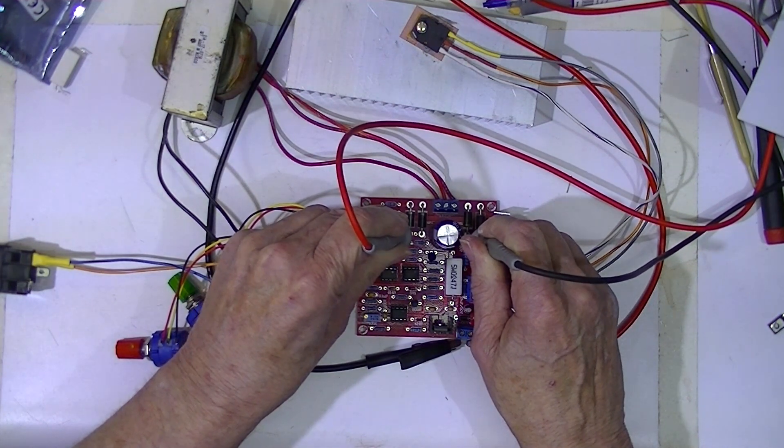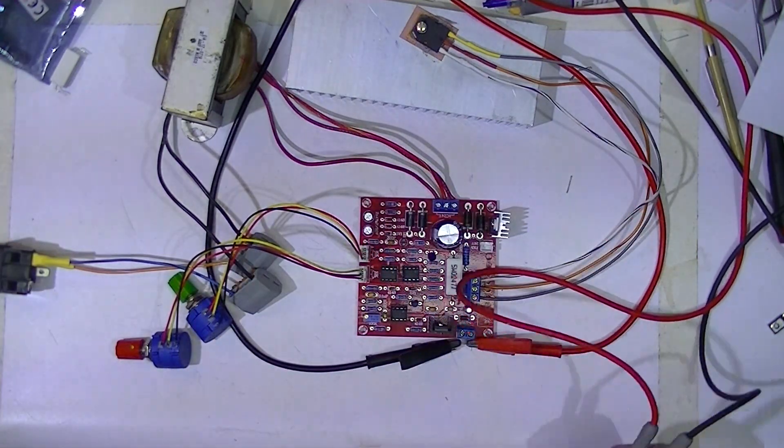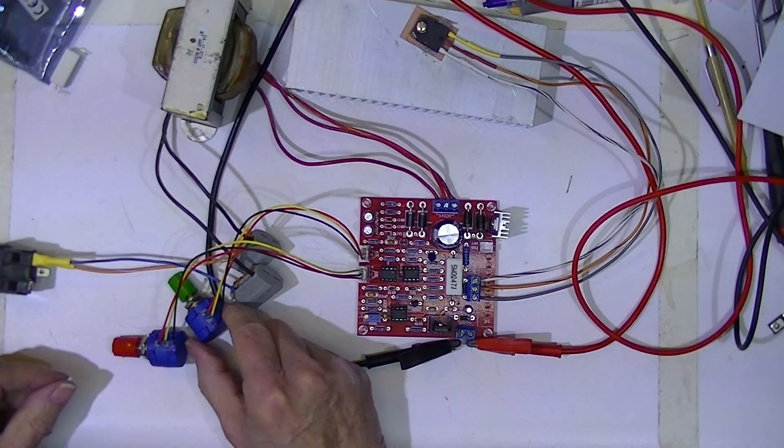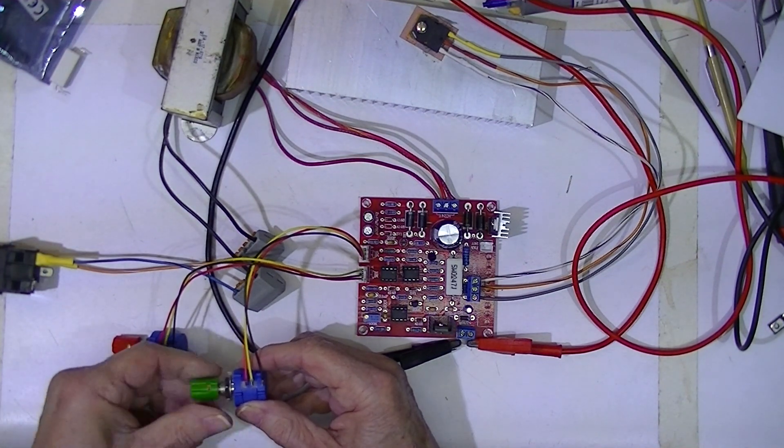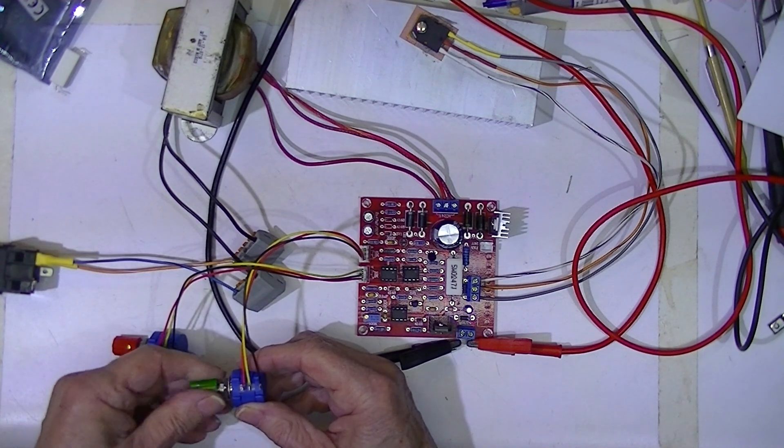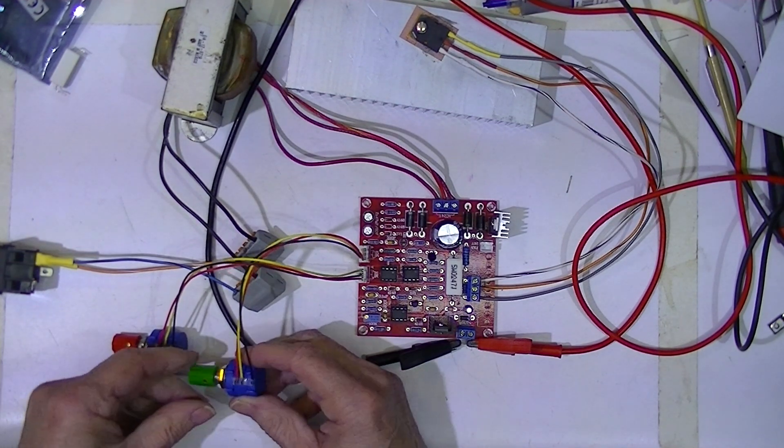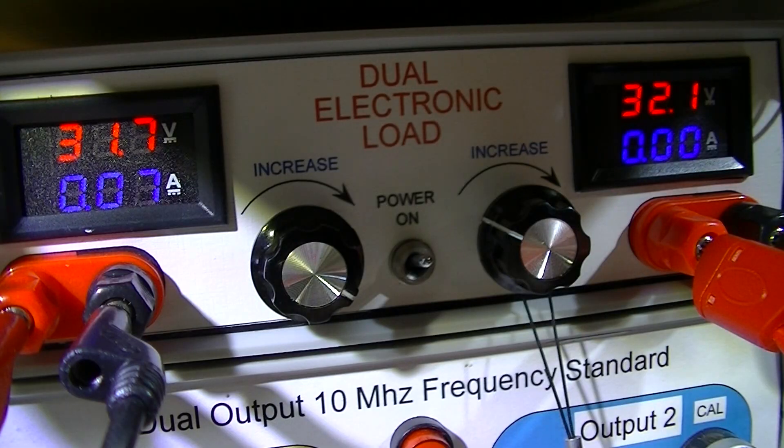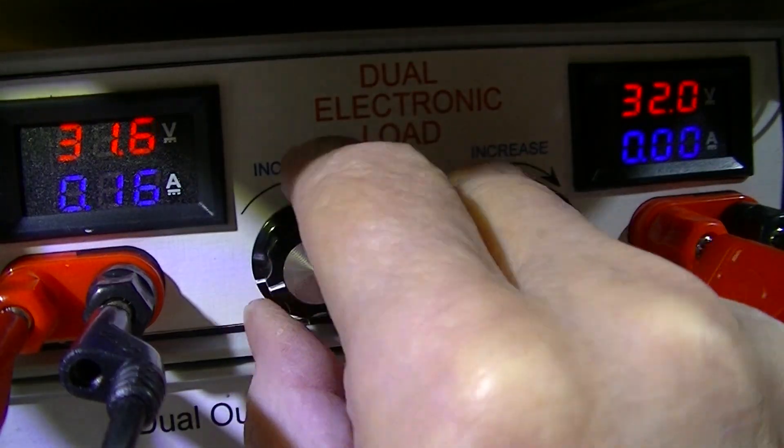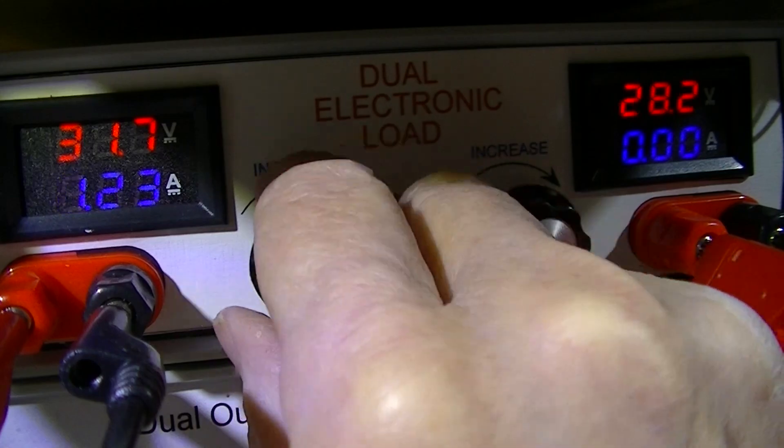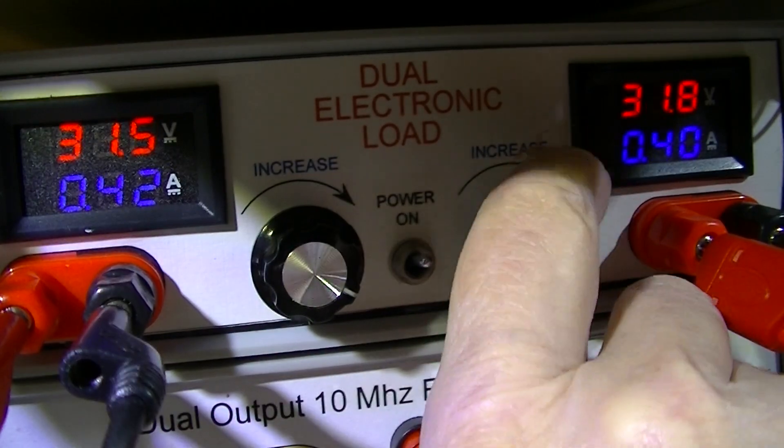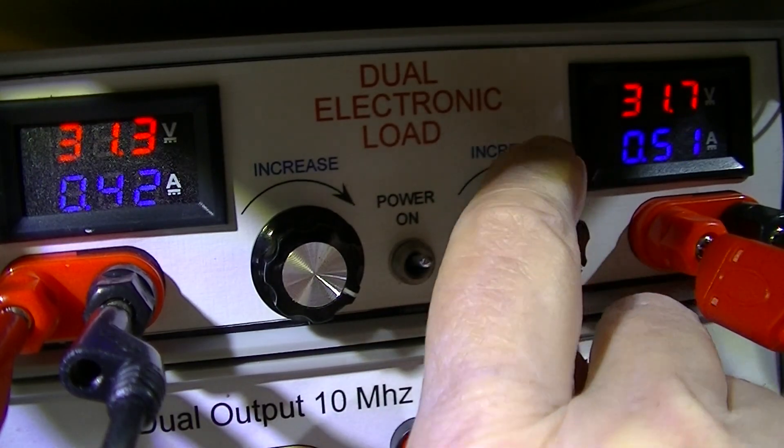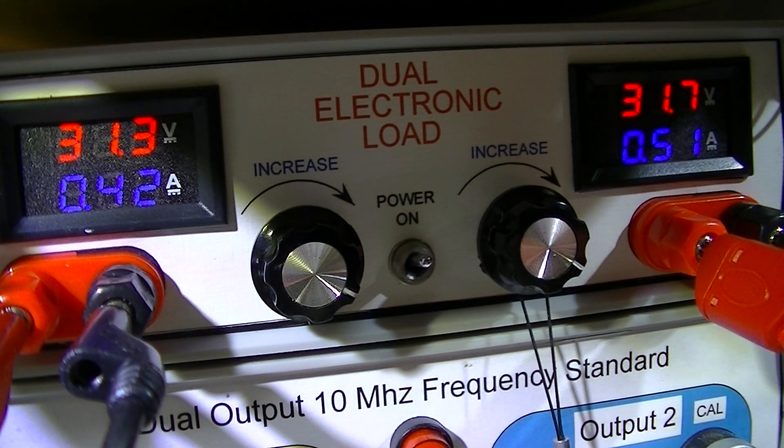Of course, that's at no current. So I'm going to increase the current limiting setting, first of all. Now, that does not do anything to the electronic load. There we go. And I'll begin to increase the current drawn from the power supply. So there's about a half an amp. See, if we total these, that's about one amp of current being drawn from this power supply.